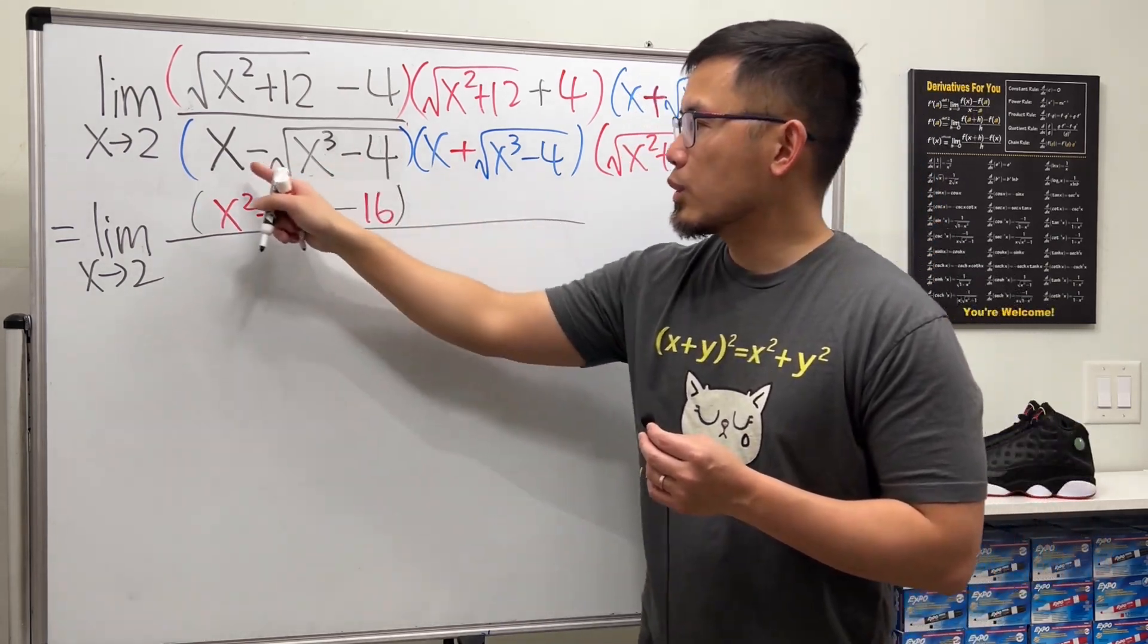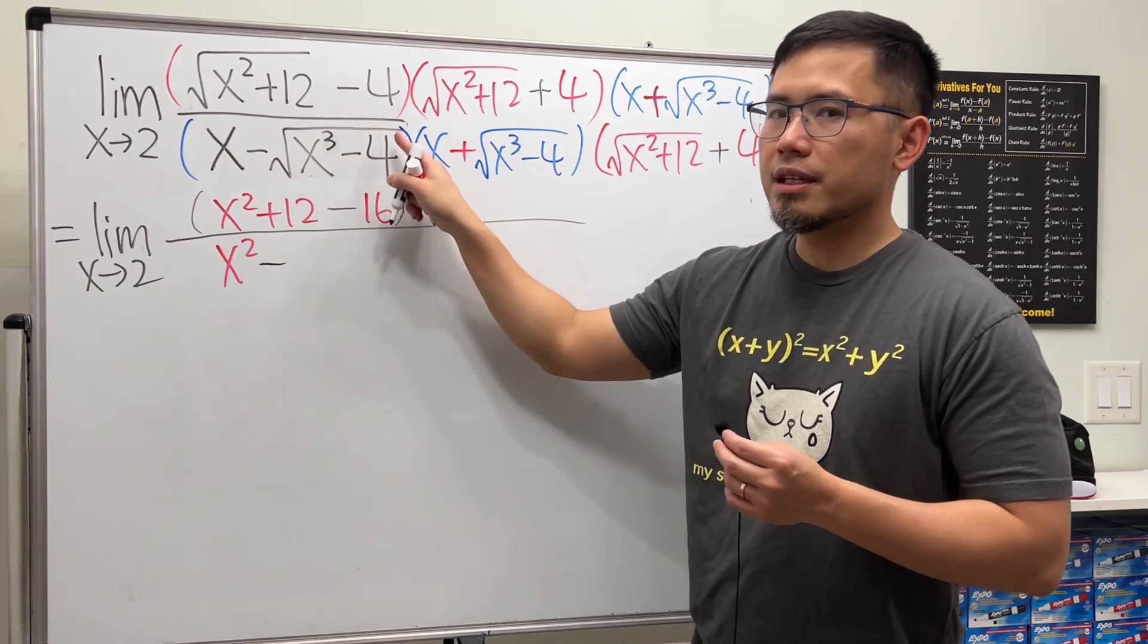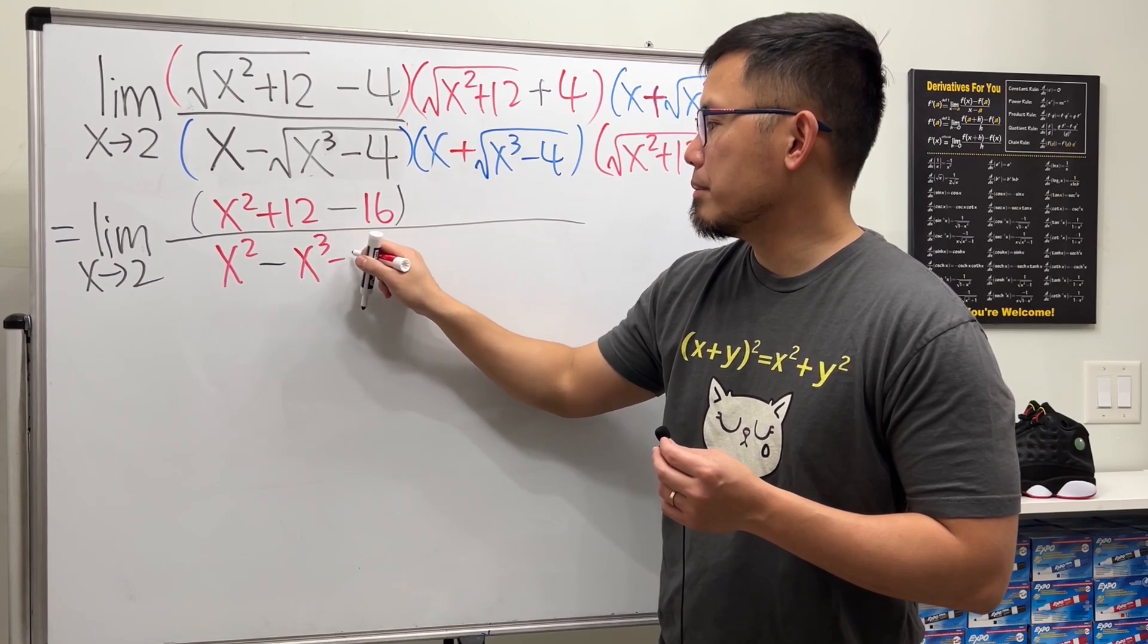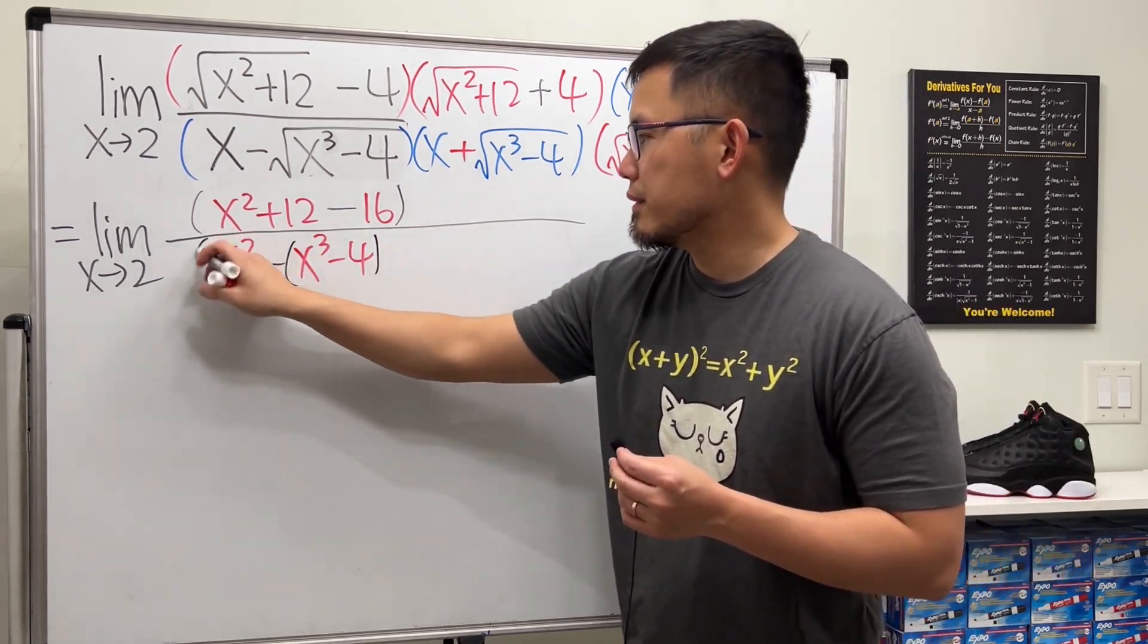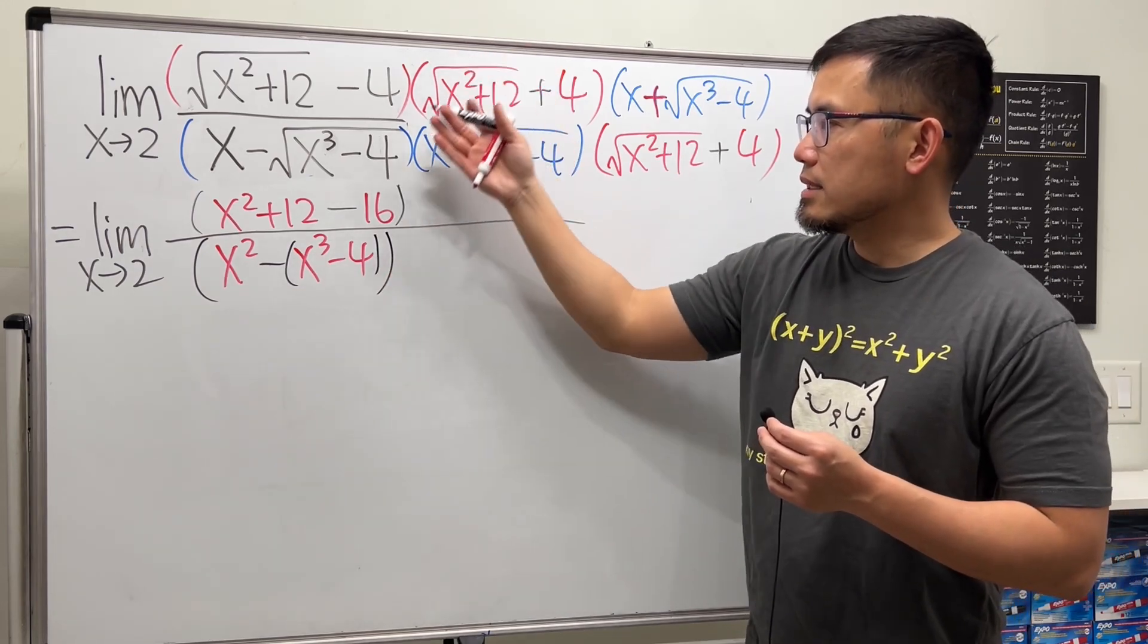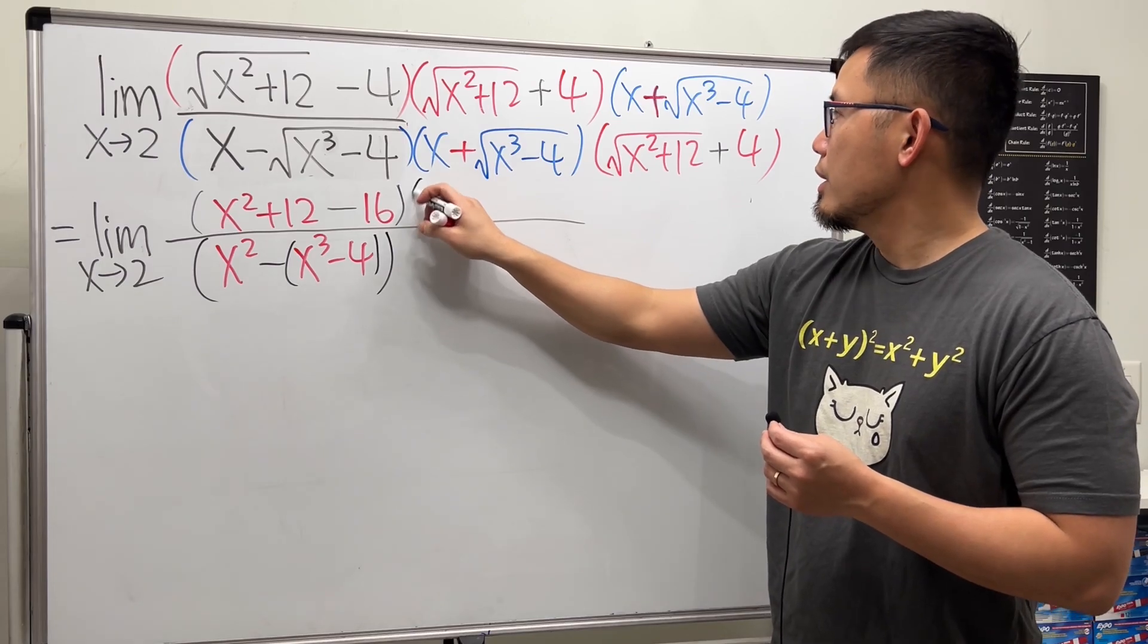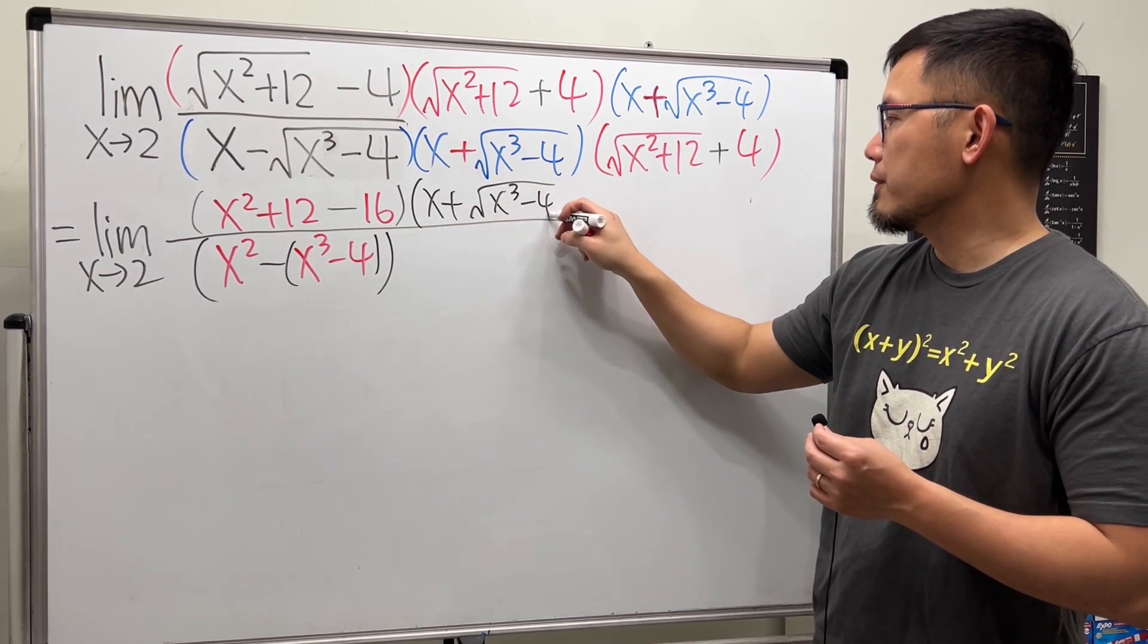For the bottom, square the first, we get x squared. And then minus square the second, square root squared, we cancel. So just get inside, x to the third power minus 4. But be careful though, we will have to distribute the negative. So that's the result for this and that. Now we have this and that. Just put it down here. We have x plus the square root x to the third power minus 4.